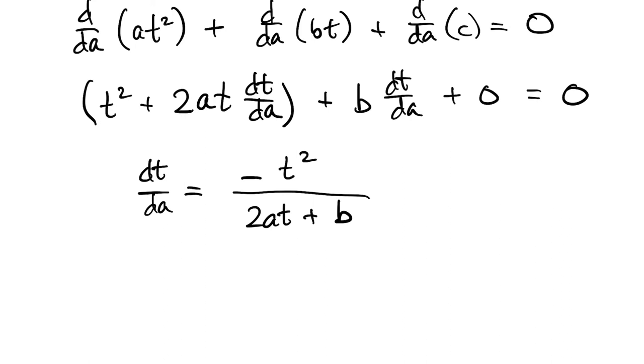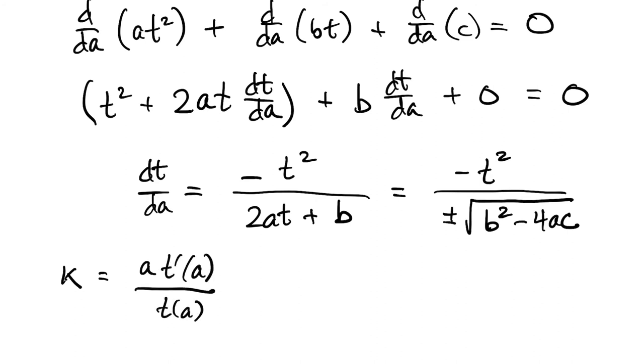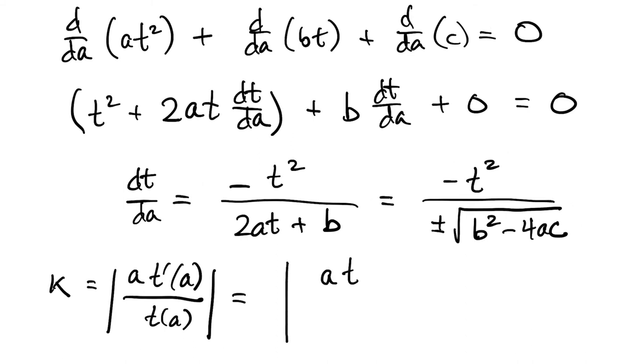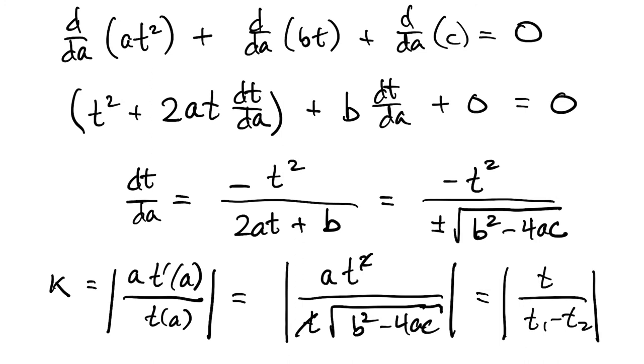Then we can solve for dt/da. Now remember, t is meant to be a root of the polynomial, so it satisfies the quadratic formula. If you put that in and play around a little bit, you find out that we can boil this down to a simpler-looking expression. Finally, to get kappa, we take this derivative, we multiply by a, which is the data, what we called x before, and we divide by t, which is the root, which is the solution, or f of x in our language from before. And if we put all that in, and we appeal once more to the quadratic formula, we get a pretty memorable expression, which is that the condition number is the ratio of the root t itself over the difference of the two roots.